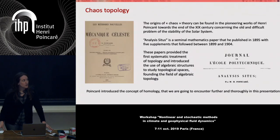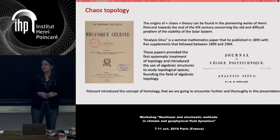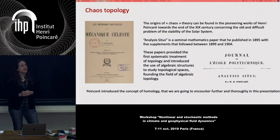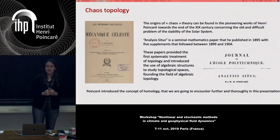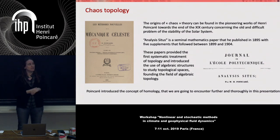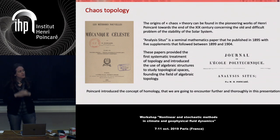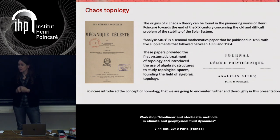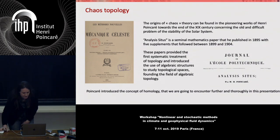We are at l'Institut Henri Poincaré, and my presentation is quite close to what Henri Poincaré did. We know the origins of chaos theory can be found in his pioneering works towards the end of the 19th century on the stability of the solar system. But he also has a seminal mathematics paper called Analysis Situs, published in 1895 with five supplements, providing the first systematic treatment of topology and introducing the use of algebraic structures to study topological spaces — the field of algebraic topology that I will use thoroughly in this presentation.